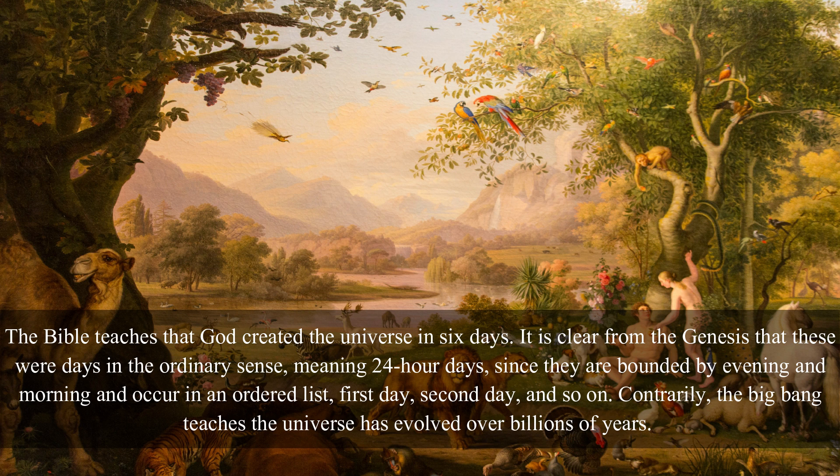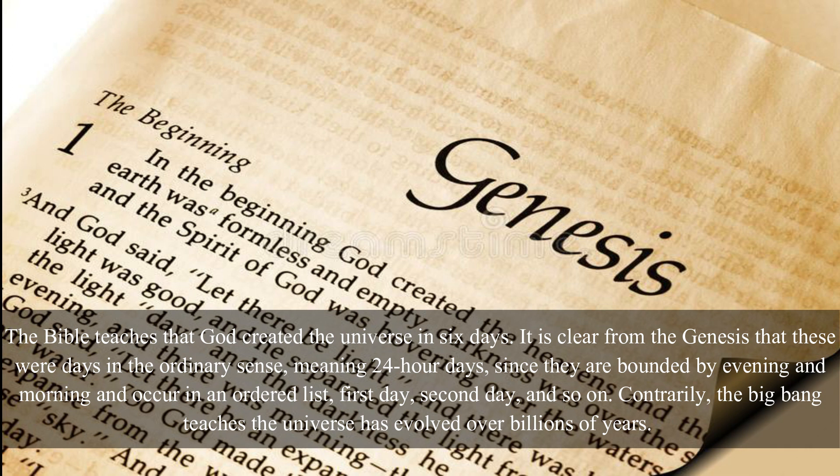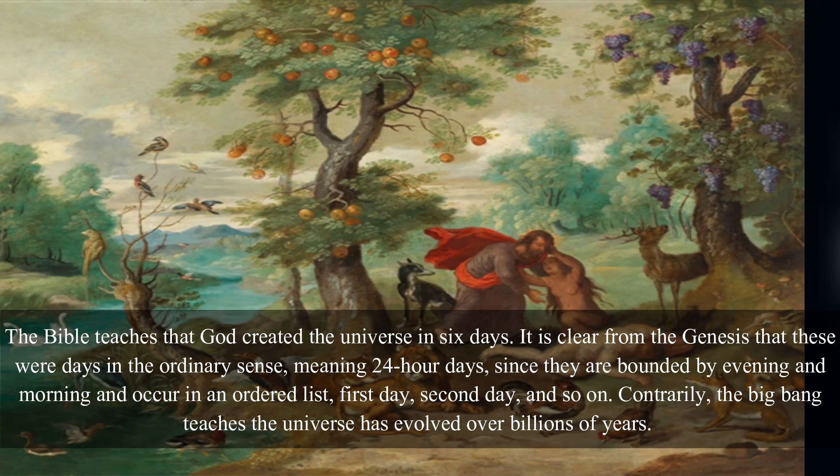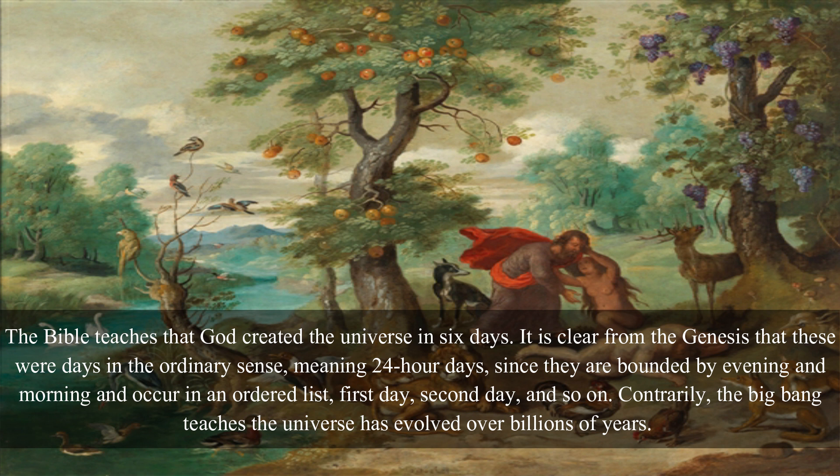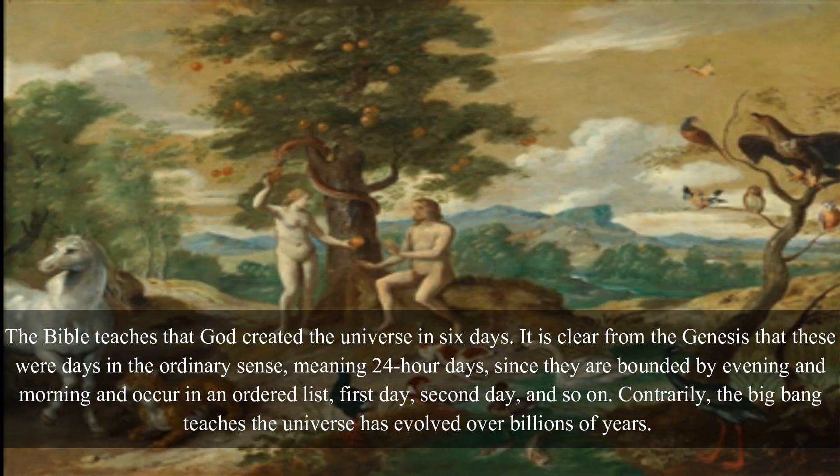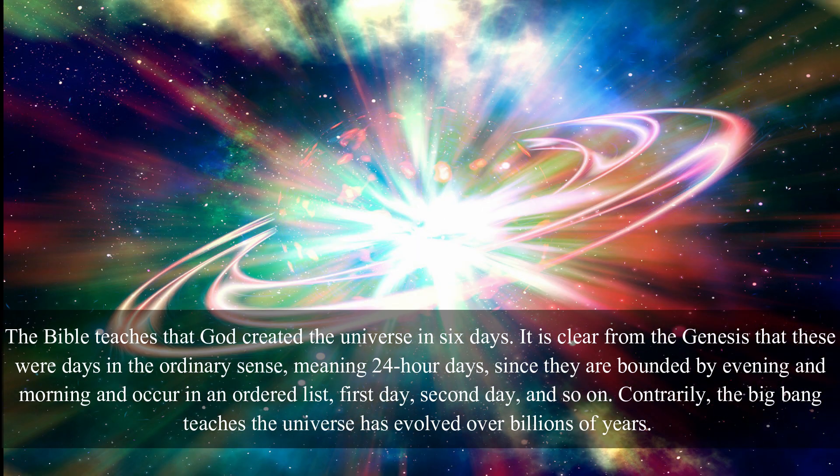The Bible teaches that God created the universe in six days. It is clear from the Genesis that these were days in the ordinary sense, meaning 24-hour days, since they are bounded by evening and morning and occur in an ordered list, first day, second day, and so on. Contrarily, the Big Bang teaches the universe has evolved over billions of years.